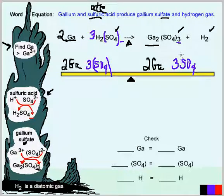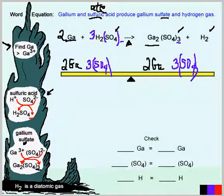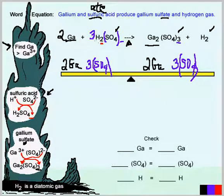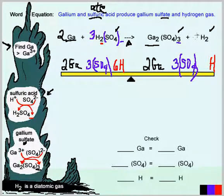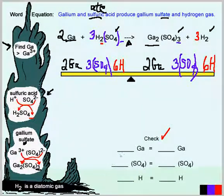Now we have three SO₄ polyatomic groups on each side. The last group is hydrogen — on the products side, with the coefficient of 3 on H₂SO₄ and two hydrogens per unit, we have 2 × 3 = 6 hydrogens on the reactants side. On the products side, we put a 3 in front of H₂, giving 2 × 3 = 6 hydrogens. The hydrogen atoms are balanced.